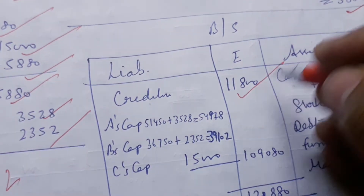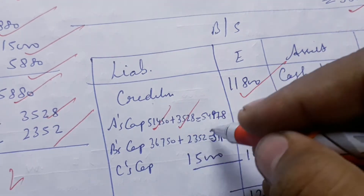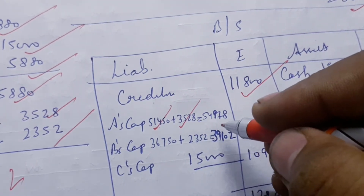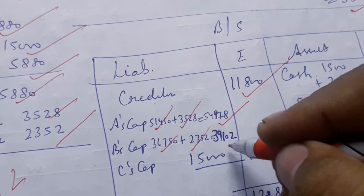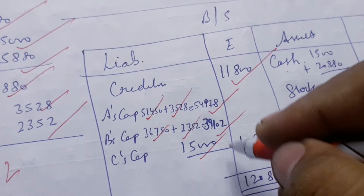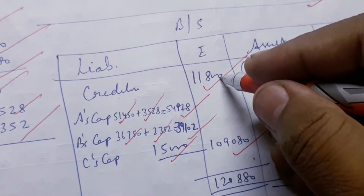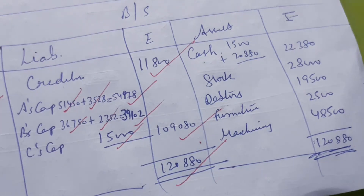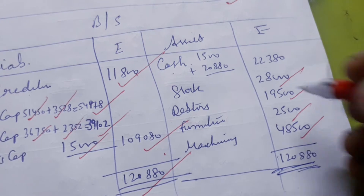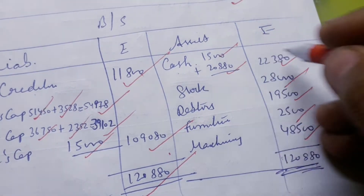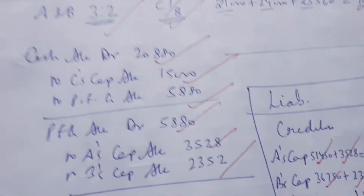The credit and balance sheet were written. Capital was $1,450. Premium money was added, giving $5,497. Adding premium money again gave $39,102, and then $15,000. It was added by $1,980. This became $1,880. The other assets were added to $2,880, then $15,000 and $5,880 in premium, completing the other assets.